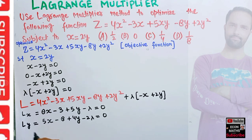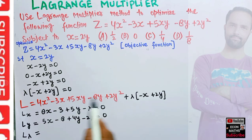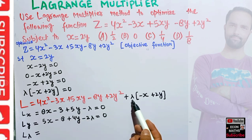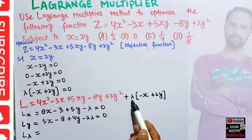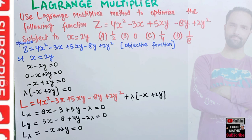We also take the partial derivative with respect to lambda. Since lambda only appears in the constraint term, the derivative gives us: ∂L/∂λ = -x + 2y = 0, which is just our original constraint.